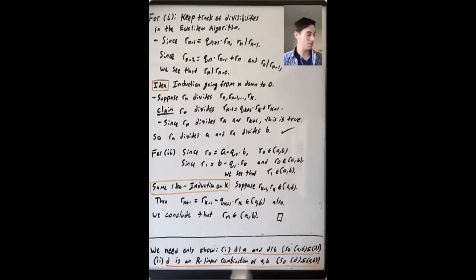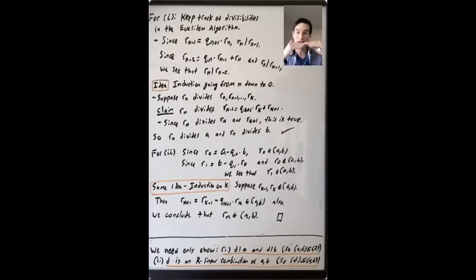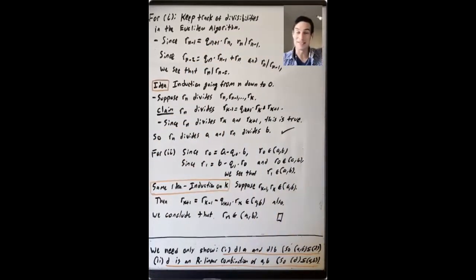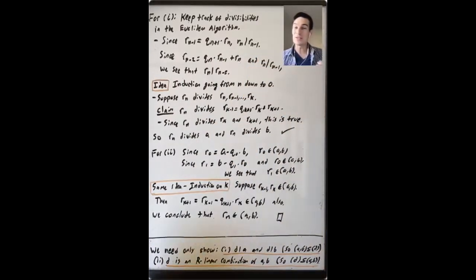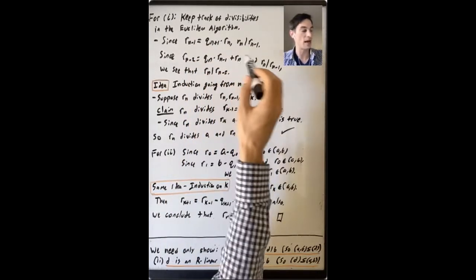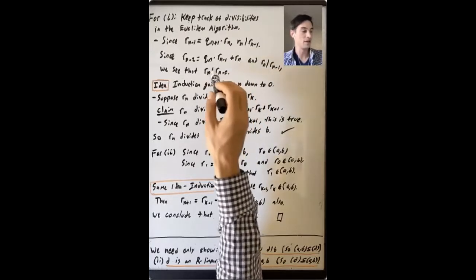Let's complete the proof. For the first part, we want to show that R_n divides A and R_n divides B by tracking divisibilities in the Euclidean algorithm from the bottom equation going back up. Since R_{n-1} equals Q_{n+1} times R_n, R_n divides R_{n-1}. Then since R_{n-2} equals Q_n times R_{n-1} plus R_n, and R_n divides R_{n-1}, it divides the first term and certainly divides itself, so it divides their sum — thus R_n divides R_{n-2}.